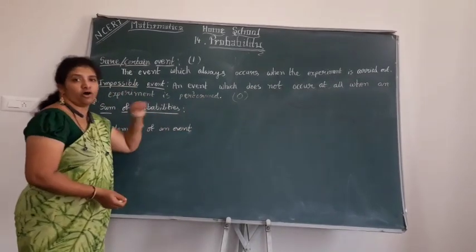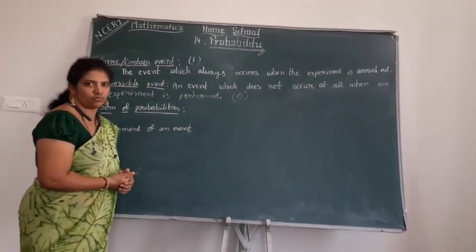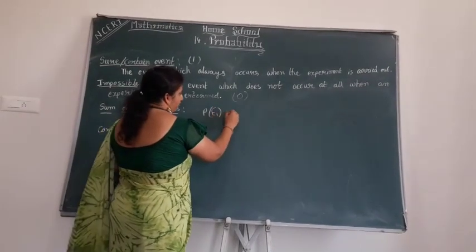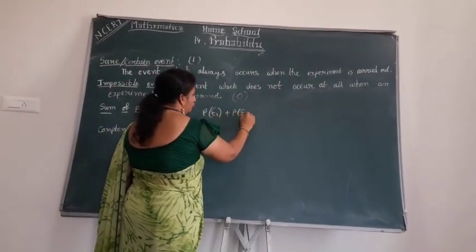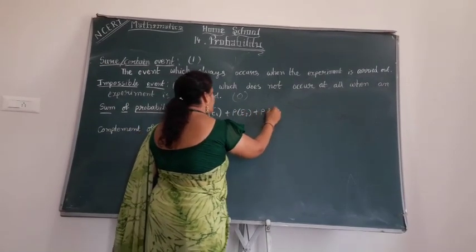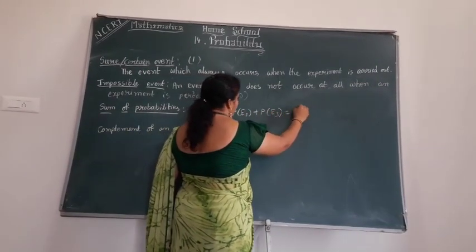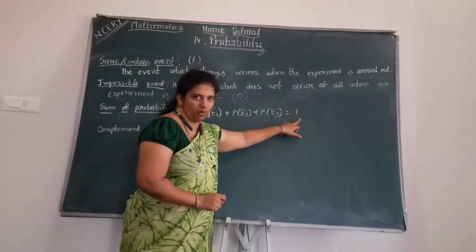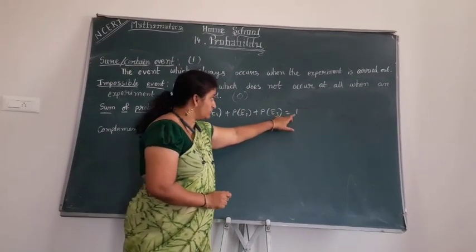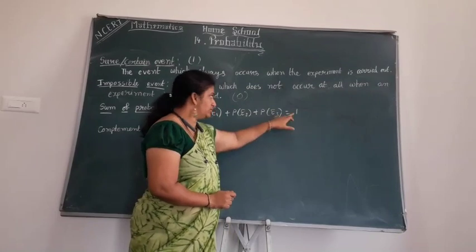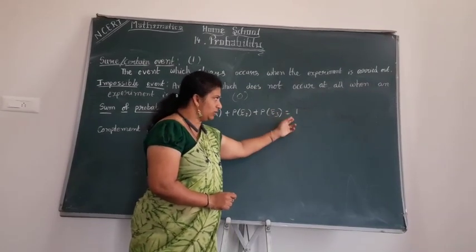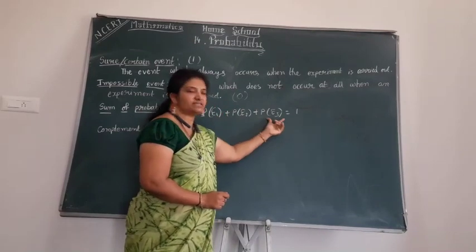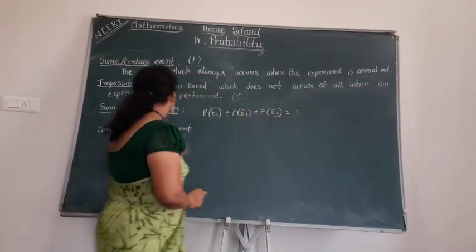Next, the sum of all probabilities. What is the sum of all probabilities? P(E1) + P(E2) + P(E3) and so on — the sum of all these elementary events equals 1. It cannot be less than 0 or negative, and cannot be more than 1. So the sum of all probabilities is always 1.